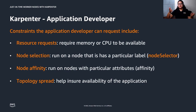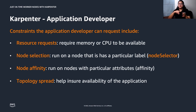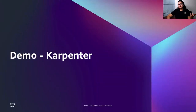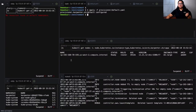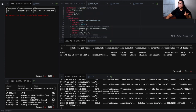Kubernetes features that Karpenter supports for scheduling pods include node affinity, node selector, pod disruption budgets, topology spread constraints, inter-pod affinity, and anti-affinity. Now let's quickly look at the demo. I've already set up a Kubernetes cluster with Karpenter installed. You can find all the steps in the Karpenter documentation — I'll provide the link towards the end of this presentation.